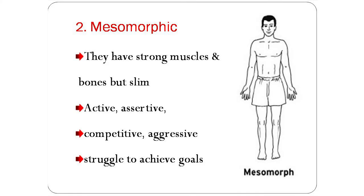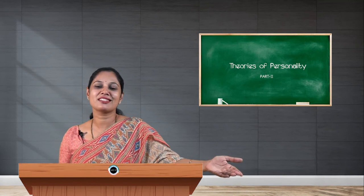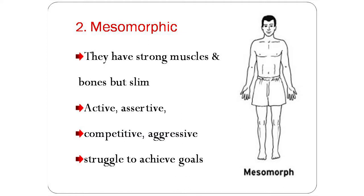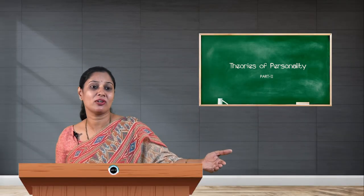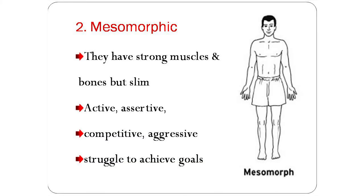The second type is mesomorphic. Mesomorphic is a little opposite of the first personality, endomorphic. These are people who have very strong muscles and bones but are slim in nature. The build is very slim, but they have strong muscles and bones. The personality character of these people is that they are highly active and very assertive — neither passive nor aggressive. They are very assertive, very competitive, hold responsibilities, and sometimes showcase aggressive nature but not always. These are people who struggle to achieve goals; though responsible, they find it very tough to reach the goal, and obstacles will be more for them, according to Sheldon.